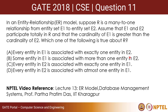Hello all. Today we will be looking at a question given in GATE 2018 on an entity relationship, or ER model. Suppose R is a many-to-one relationship from entity set E1 to entity set E2. Assume that E1 and E2 participate totally in R and that the cardinality of E1 is greater than the cardinality of E2. Which one of the following is true about R?